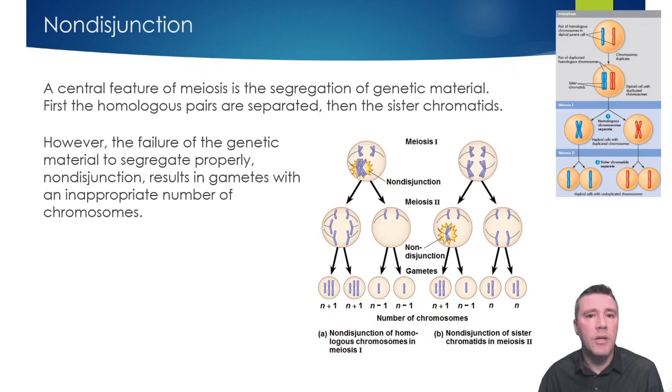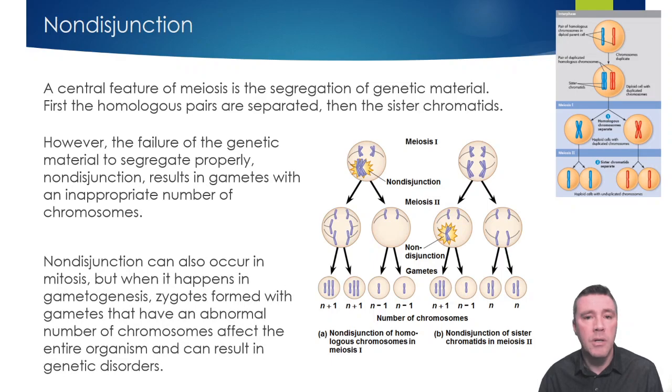But before that, you should recall that a separation of genetic material also occurs in mitosis. Nondisjunction of sister chromatids can also occur in mitosis, but since cells produced by that process are not passed on to offspring since they're body cells, it does not affect the phenotype of the entire organism.